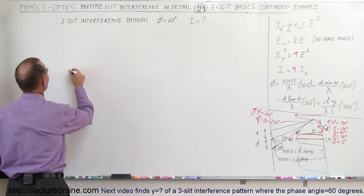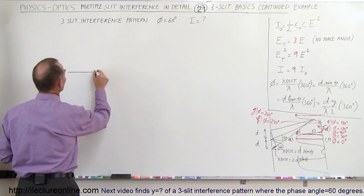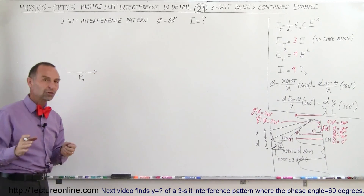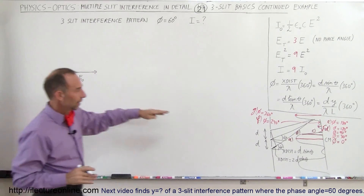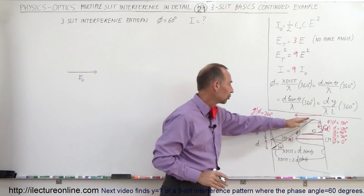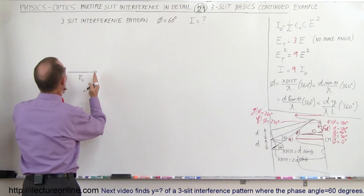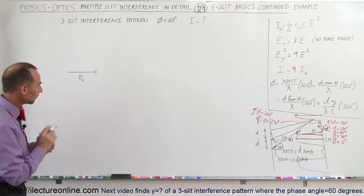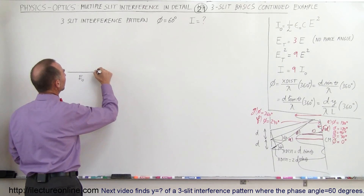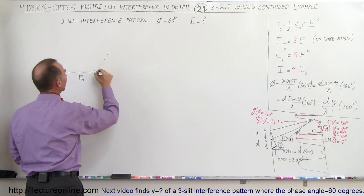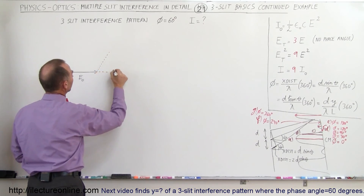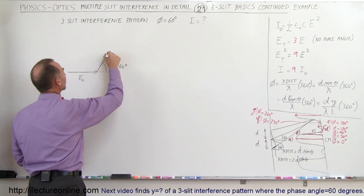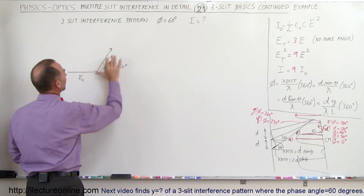The way we do that is we draw our first phasor — the magnitude in the direction of our first phasor, the first electromagnetic wave coming through the first slit, which represents the amplitude of the electric field oscillations. The second one would be at an angle of 60 degrees relative to that one, so the second phasor would be in this direction, same length but a different direction.